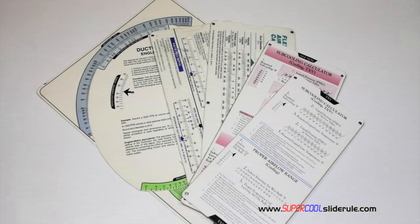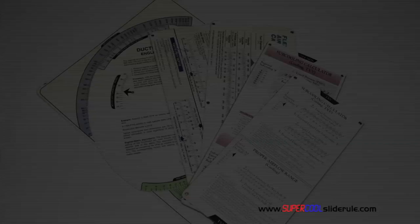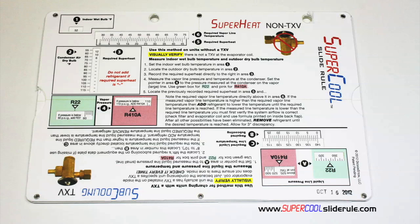Historically, technicians have carried four or five different slide rules — one for R22, one for R410A, one for metal duct sizing, one for flexible duct sizing, and yet others for diagnostics or troubleshooting. Thankfully, those days are gone.